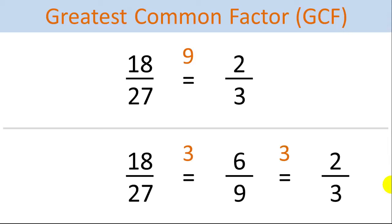We can see that both are still reducible further by dividing by 3 again to get 2 thirds. So this took twice as many steps, and for larger fractions it may take many more steps. A thousand could be divisible by 2 several times, so we could be doing multiple divisions rather than just using the Greatest Common Factor to reduce in a single step.